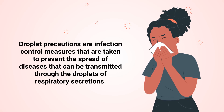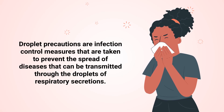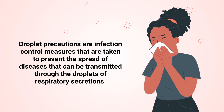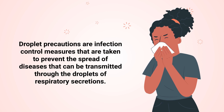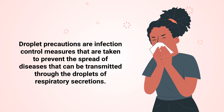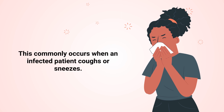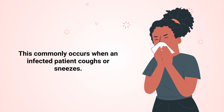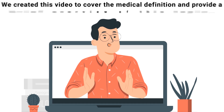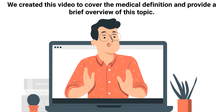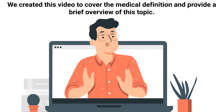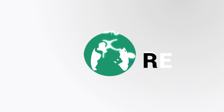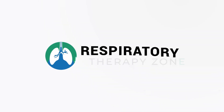Droplet precautions are infection control measures that are taken to prevent the spread of diseases that can be transmitted through the droplets of respiratory secretions. This commonly occurs when an infected patient coughs or sneezes. We created this video to cover the medical definition and provide a brief overview of the topic, so if you're ready, let's get into it.